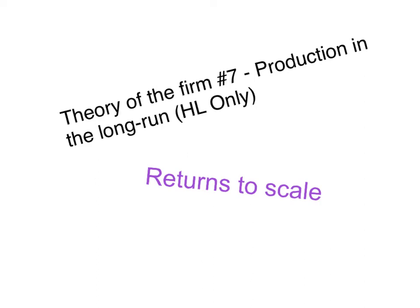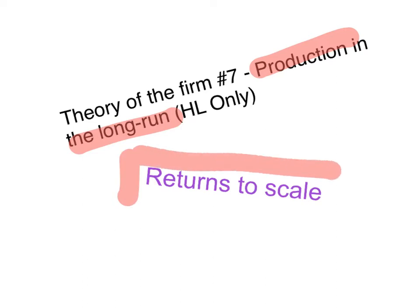This is video number seven of the Theory of the Firm series. In this video I'm going to talk about production in the long run. We'll focus on returns to scale. This is in the high-level only component of the IB Economics syllabus.